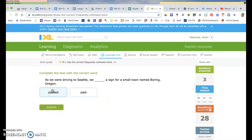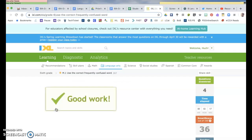As we were driving to Seattle, we passed a sign for a small town named Boring, Oregon. Passed in this case means to go on, like on your left, as Captain America would say, because he was passing someone. This means in the past, so something that happened prior. So this is the one that we want.